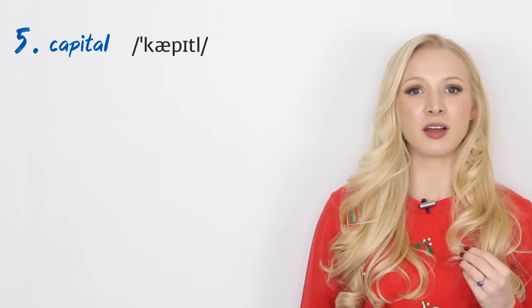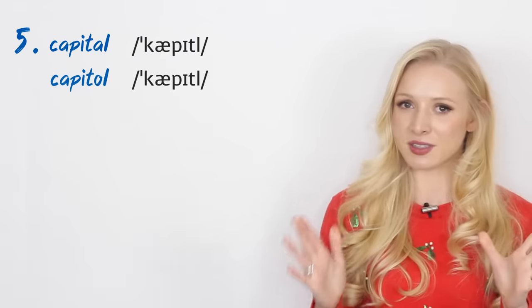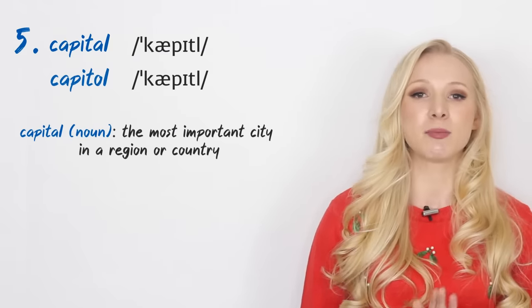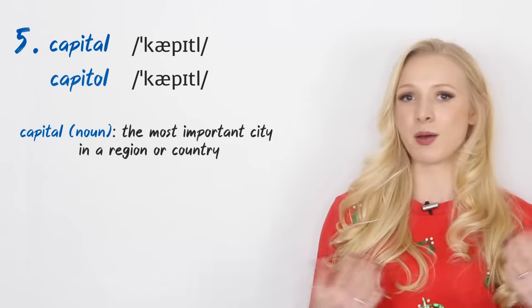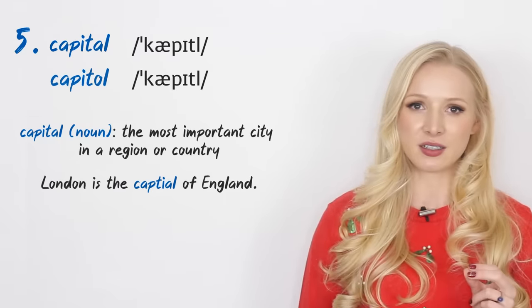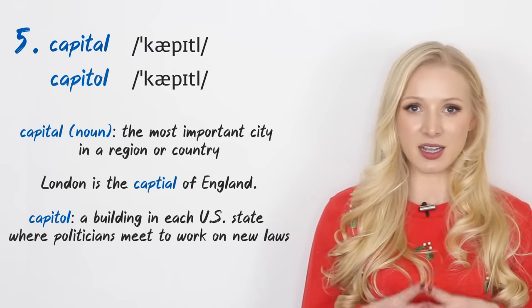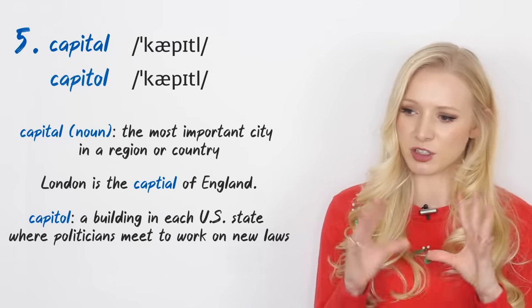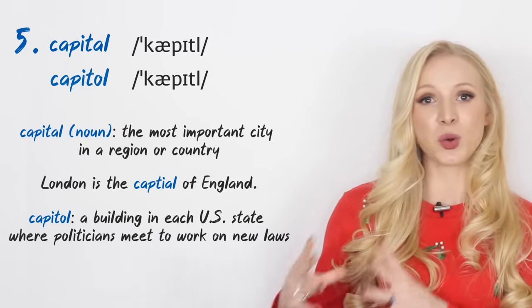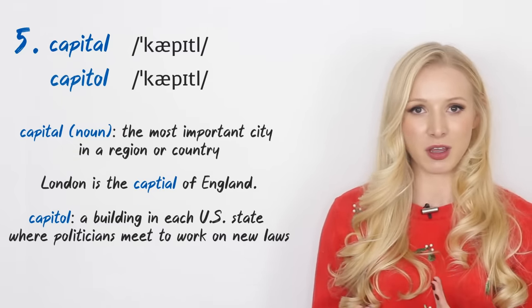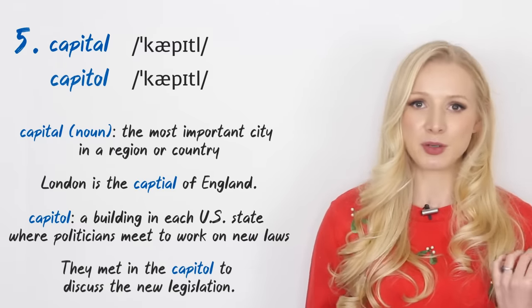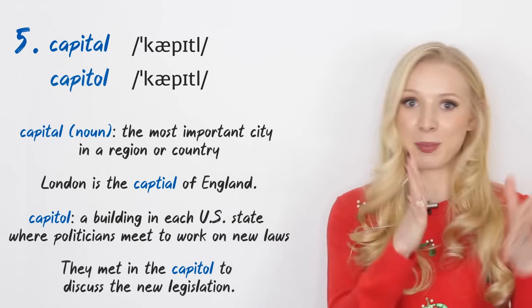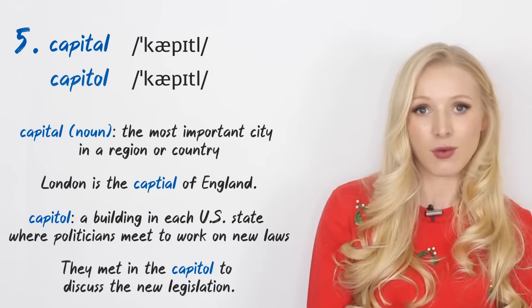Number five, we have capital and capitol, pronounced in the same way but with different spellings. So capital with an L means the most important city in a region or country. For example, London is the capital of England. Capitol O-L is a building in each US state, and I think there's one called the Capitol in Washington as well which is more specific, where politicians meet to work on new laws. So you can see how they could be confused. An example: they met in the capital to discuss the new legislations. Capitol O-L could be confused for the capital city. You just have to see it written down or you need to know the context.